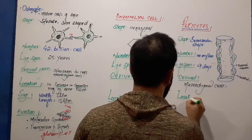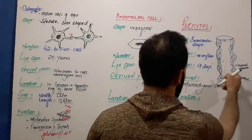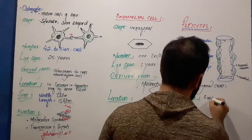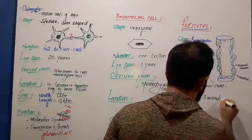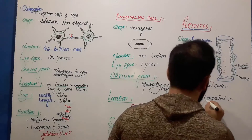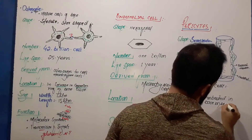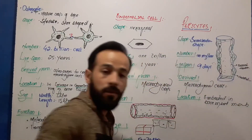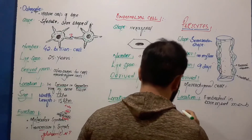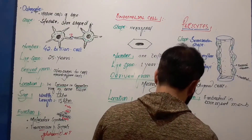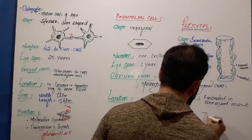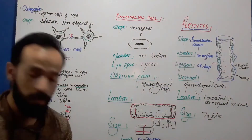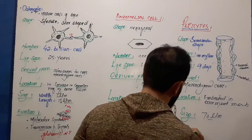What is their location? As mentioned, they are mostly embedded in the basement membrane around blood vessels. What is their size? The size of these pericytes is about 70 micrometers.